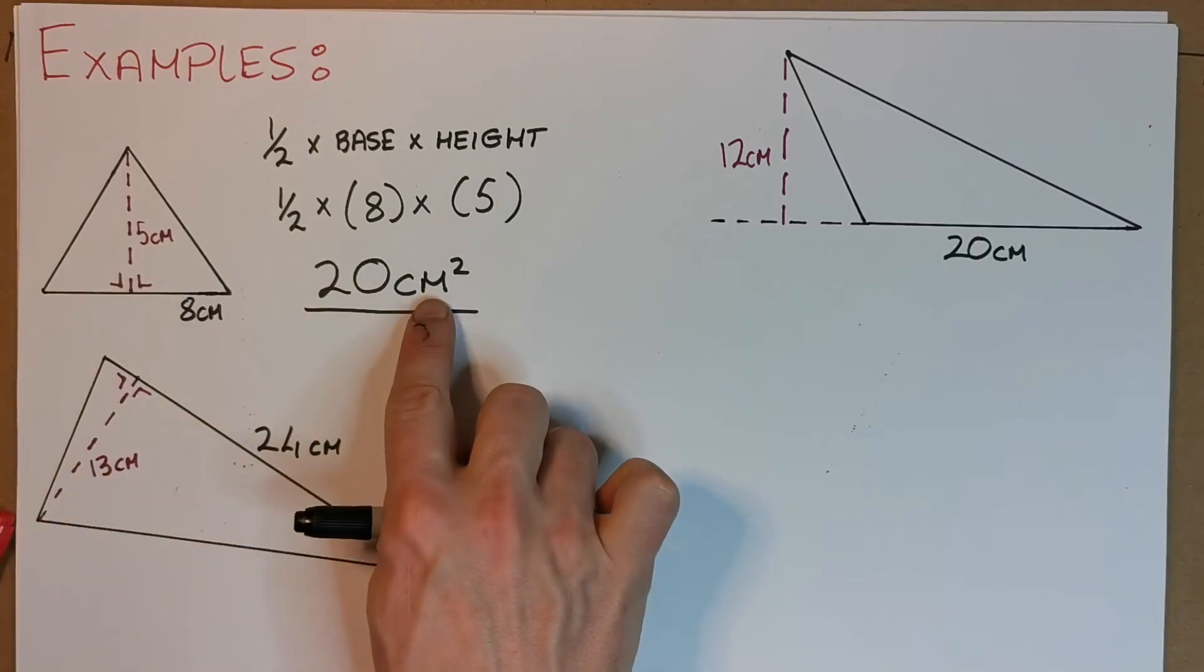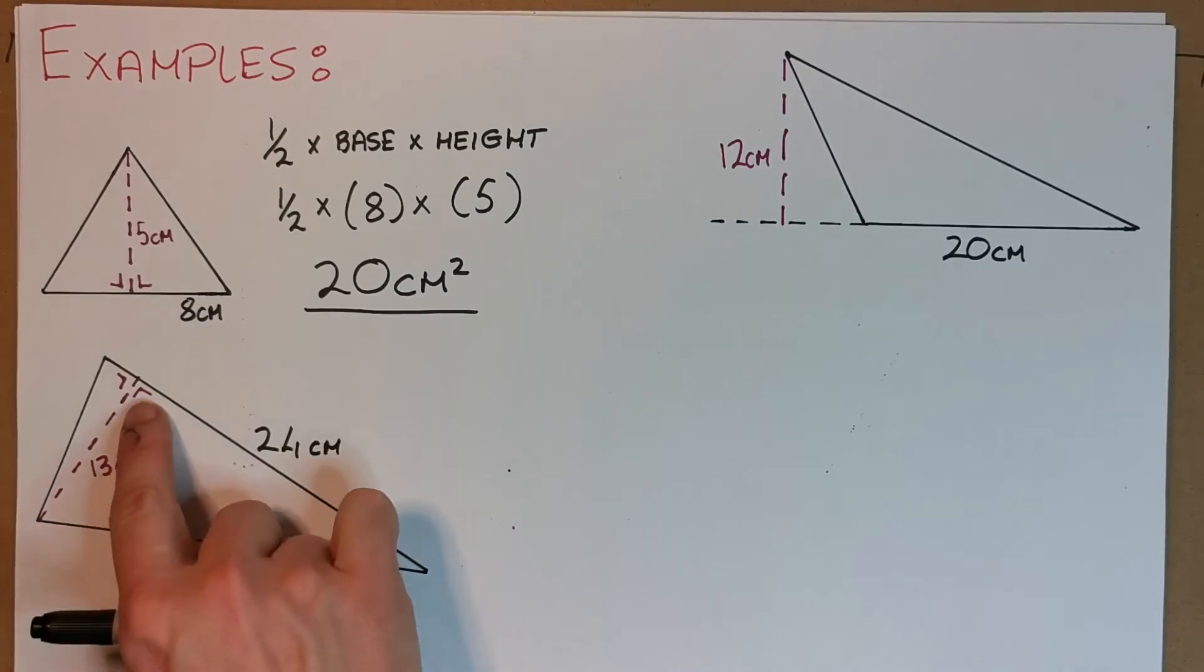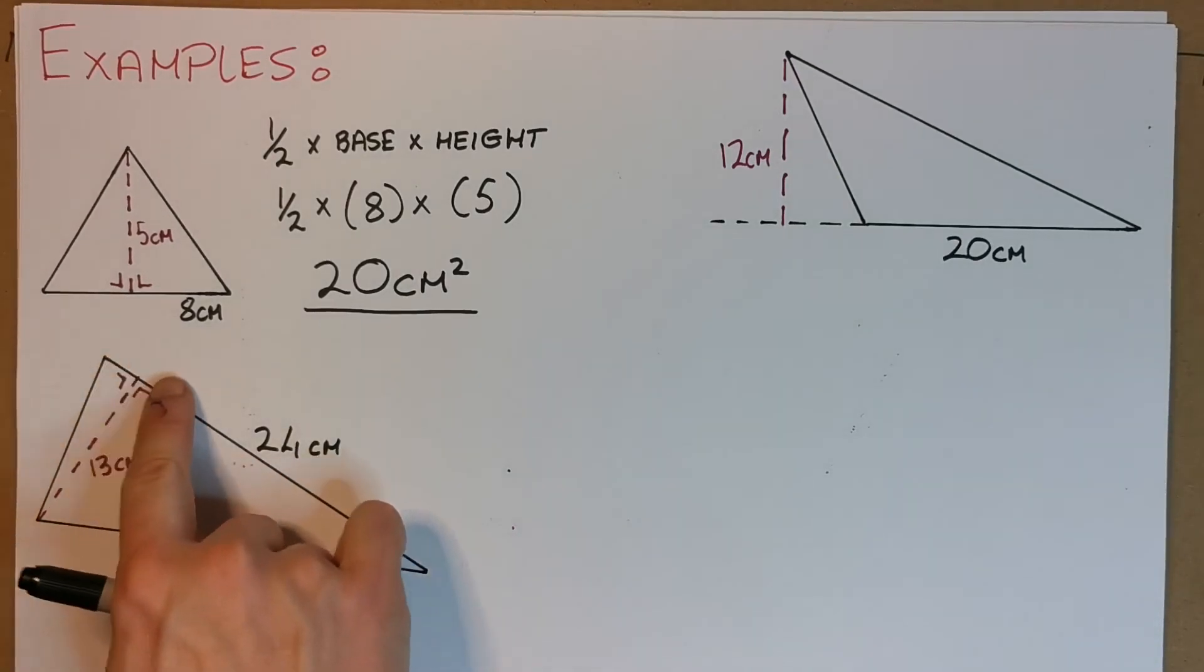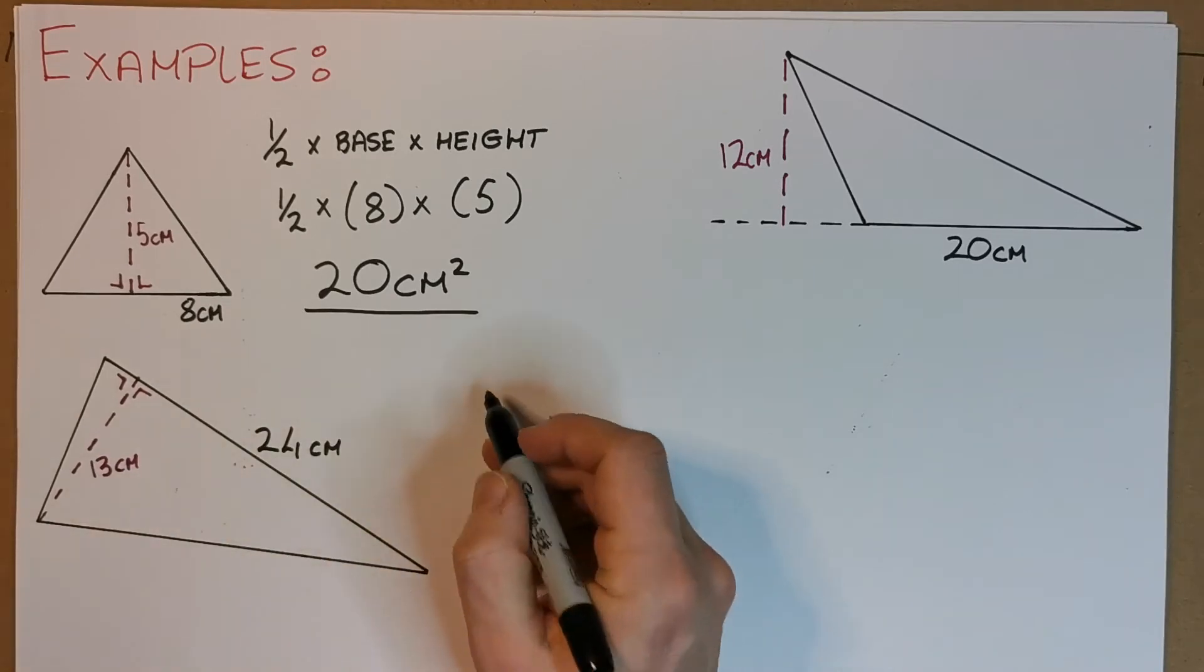Let's look at the second example. We have a perpendicular height line of 13 centimeters and our baseline here of 24 centimeters. Again, our formula is half the base by the perpendicular height.